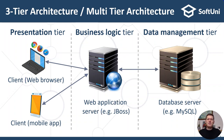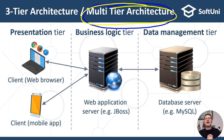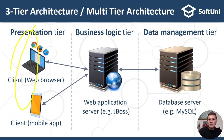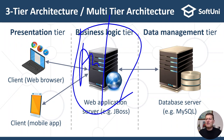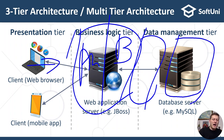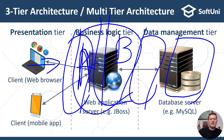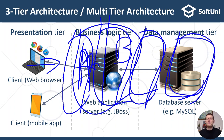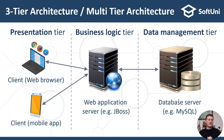Some more complex systems can be decomposed into more than three tiers, and these systems implement a multi-tier architecture. For example, they may have a client tier, an authentication tier, a business tier, a data access tier, and a database tier. Each of the original tiers — presentation, business, or data management — can be split further into more tiers. This is how multi-tier architecture can be created.